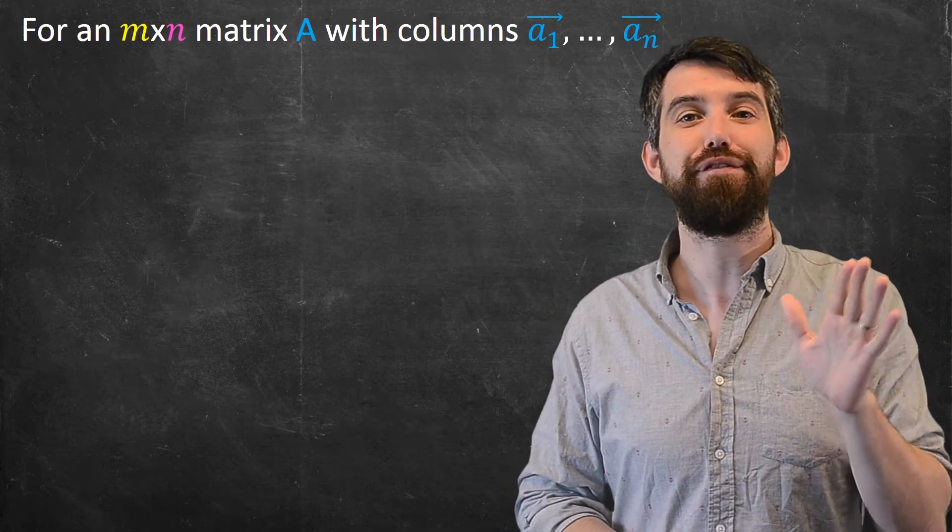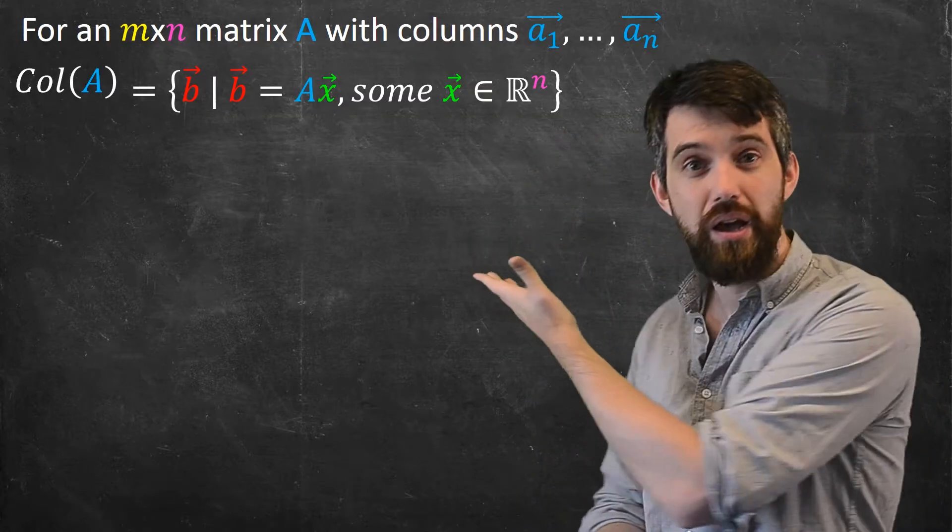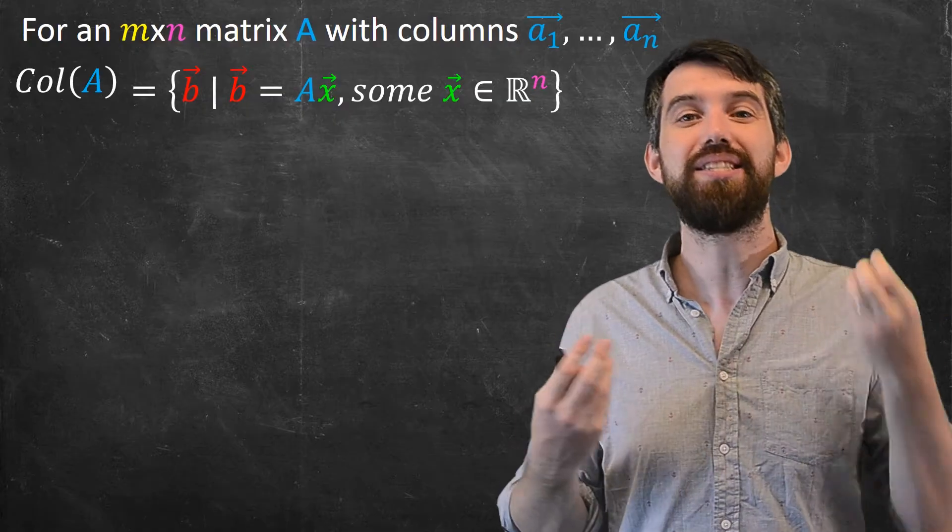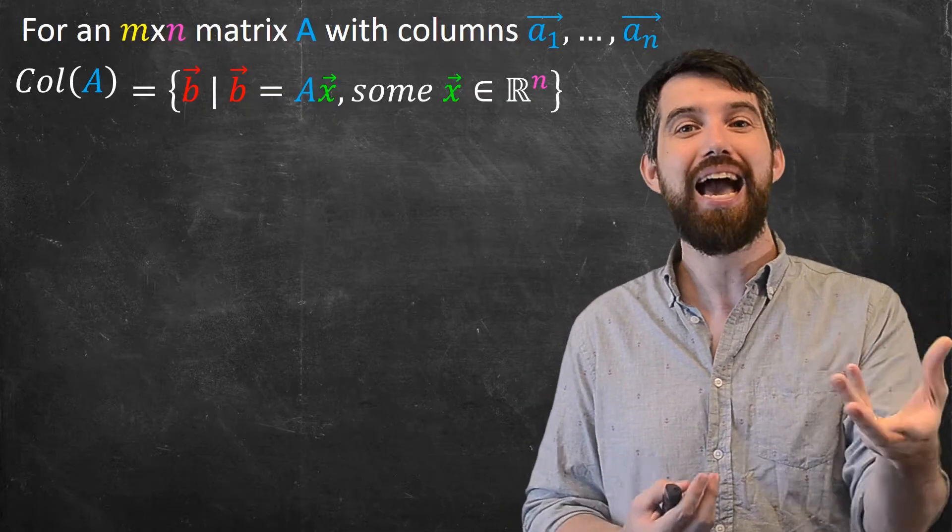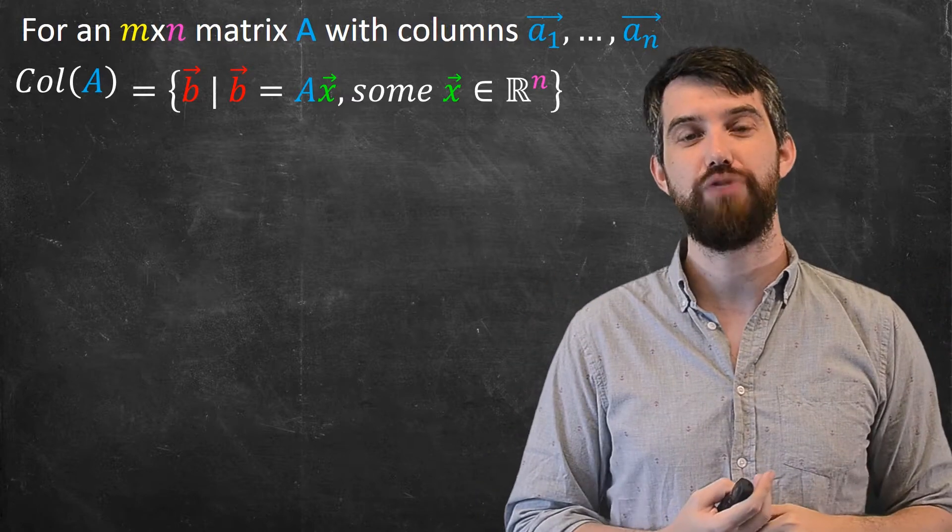Then the column space is defined to be, well, precisely what we just said. It's all the vectors b where they can be written Ax equal to b, as in there is some value of x where Ax is going to hit it. It's all of the targets of this particular transformation.